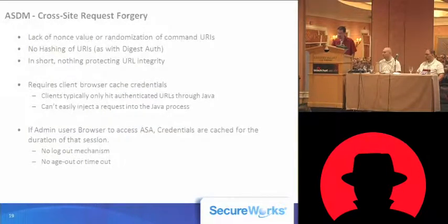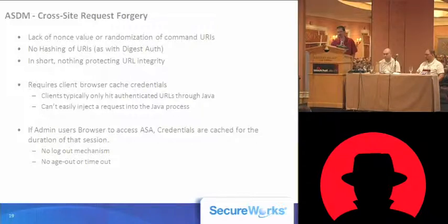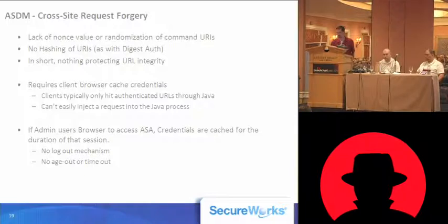The next way to leverage this weakness is through cross-site request forgery. As we discussed, you can append any command you want into the URL. There's no nonce, there's no randomization of the URL — it's just /exec/command. There's nothing protecting us from cross-site request forgery. There's no hashing of the URIs with authentication credentials as digest auth might do, so there's basically nothing protecting the integrity of the URL in that request.